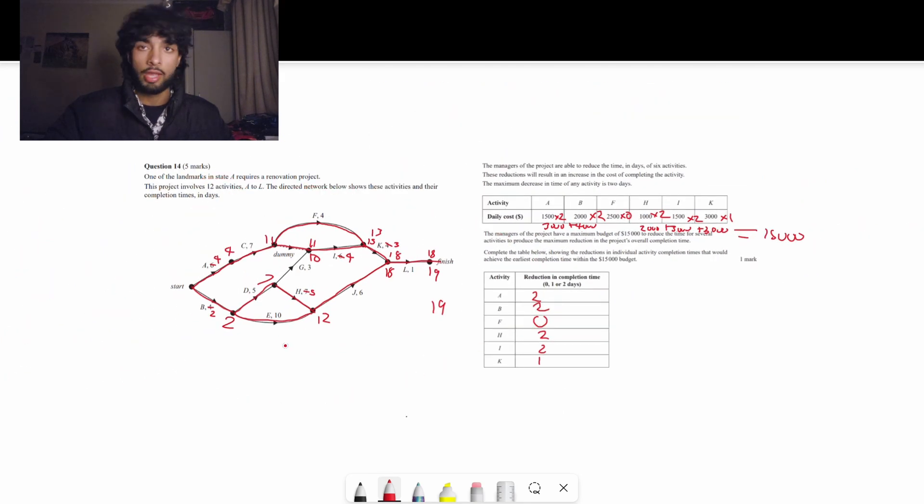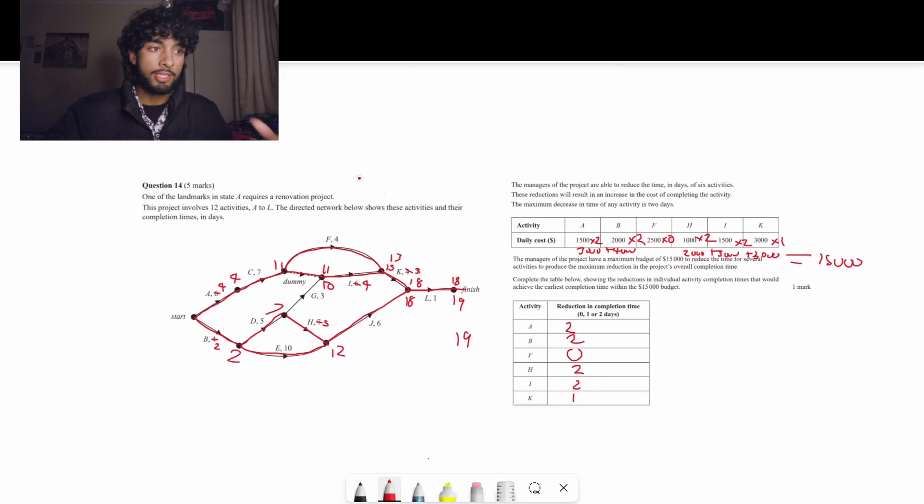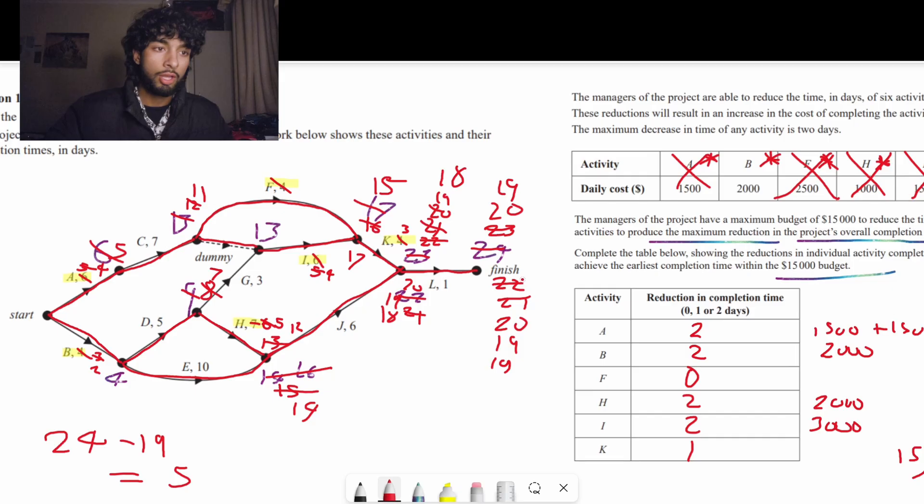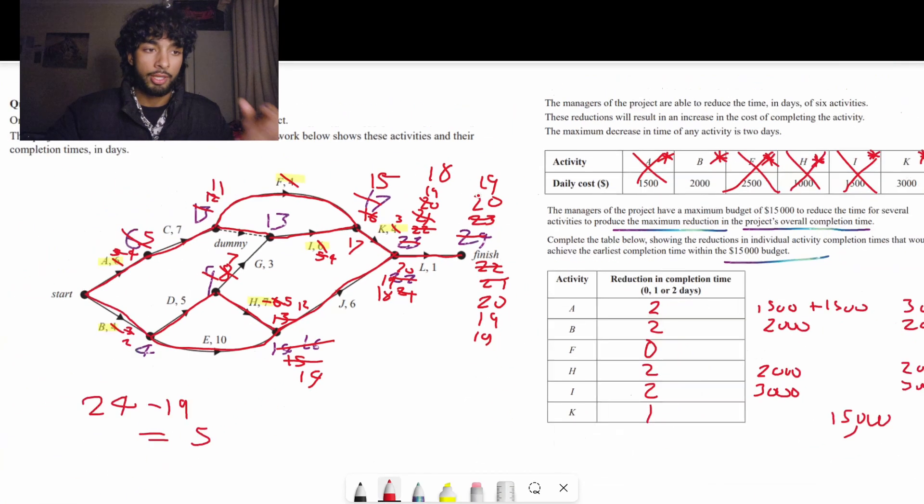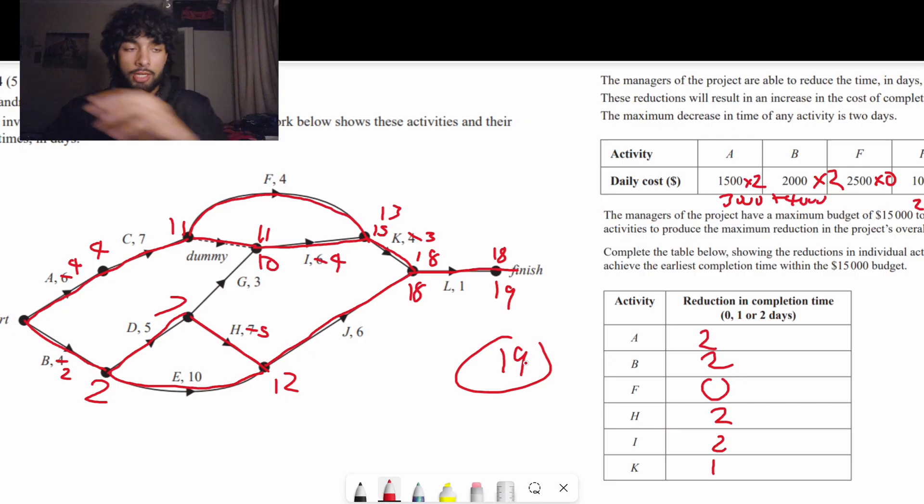Now, this method and the other method as well, they're both useful in their own respective ways. But as you can see, in this thing, we're going backwards. This one was a lot more working out. We went forwards. We went 24, then 22, 21, 20, 19. But here, we went straight to the end goal. We went to 19 by crashing everything. And then we just removed all the unnecessary crashes.